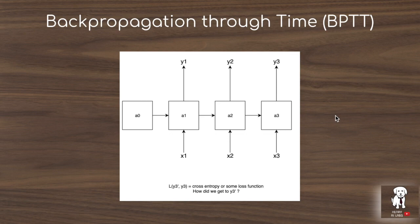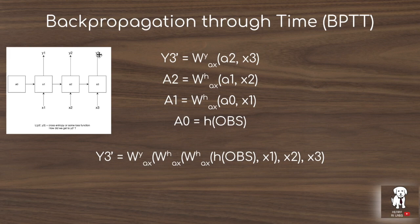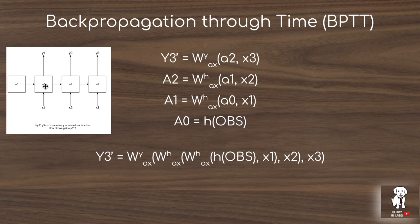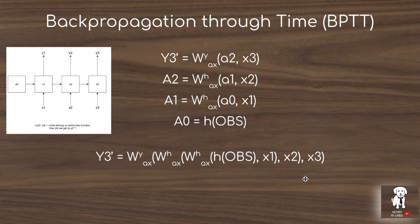This RNN structure helps illustrate how MuZero's dynamics model transitions from state to state, receiving actions from MCTS as inputs and producing value estimates as outputs. BPTT asks: when you get to output y3, what are the partial derivatives with respect to the loss function? Output y3 is a function of hidden state a2 and input x3. Hidden state a2 is a function of a1 and x2; a1 is a function of a0 and x1; and a0 is initialized, for example, by an H function applied to an original observation — directly analogous to MuZero's representation network.